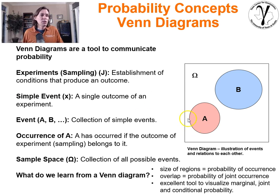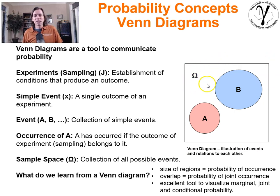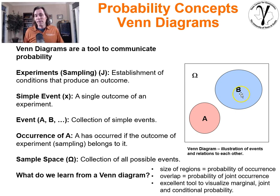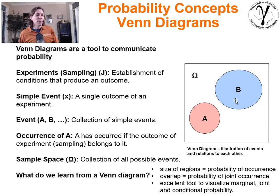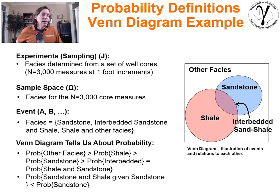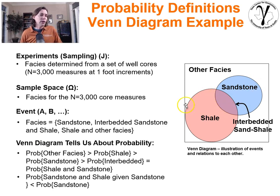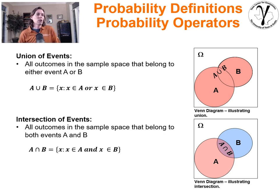With a Venn diagram, you have some omega area representing all possible outcomes, and you have regions drawn representing specific events — event A, event B. What's the probability of event B occurring relative to A? B is more likely — it's a larger area. What's the probability of A and B occurring together? They don't overlap, so it never happens. It's a very powerful method to communicate concepts of probability. You can explore different Venn diagrams, look at relative sizes, and look at overlap areas.